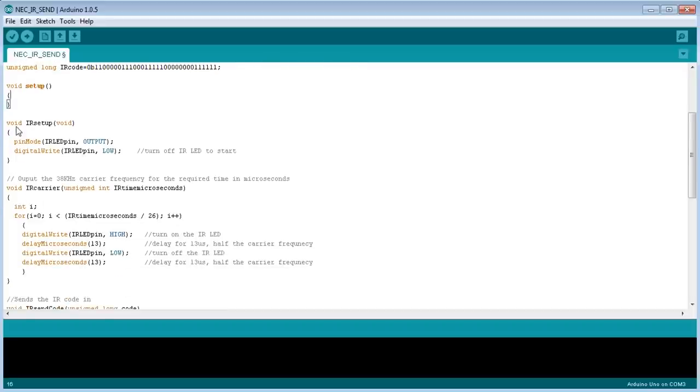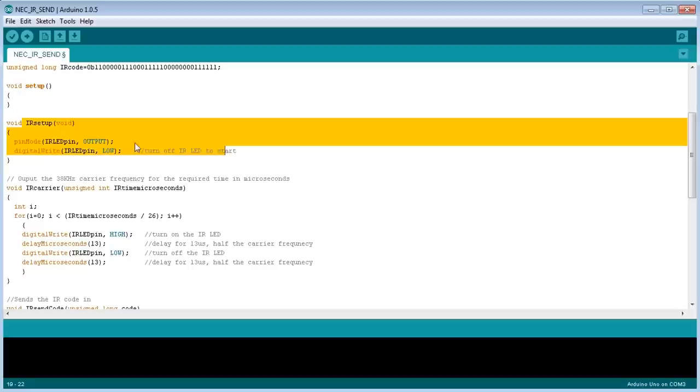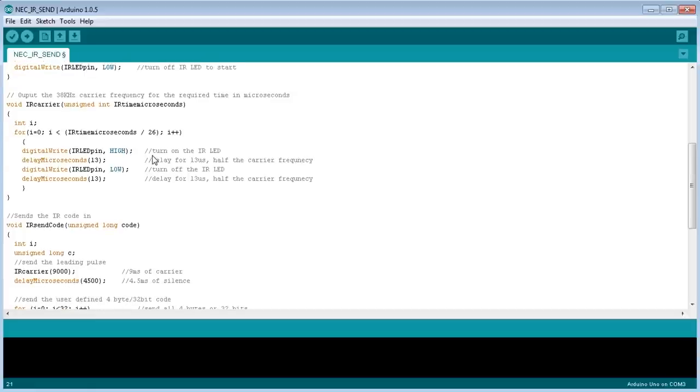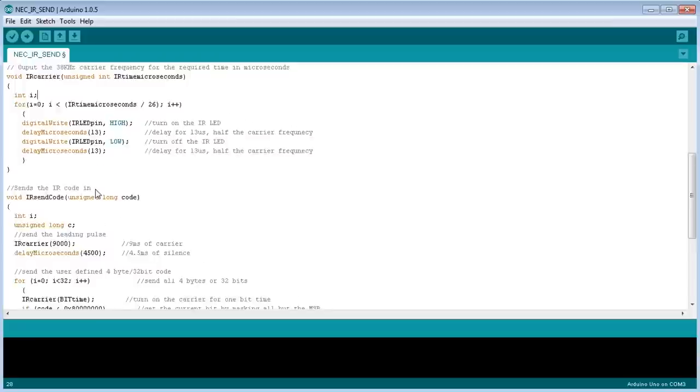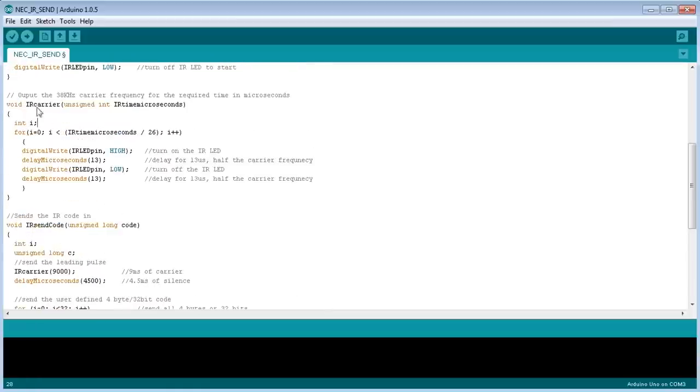So that's all set up. You can have multiple codes for any command button that you wanted to send. This one is just the reverse-engineered code for my Canon remote control record, stop record button. And then I've got a simple setup routine here that just sets up the pin as an output for the LED, and then it switches the LED off to start with. And I've got two simple routines, and that's the entire code right there, just in those two routines almost fit on that one screen. A couple of dozen lines of code.